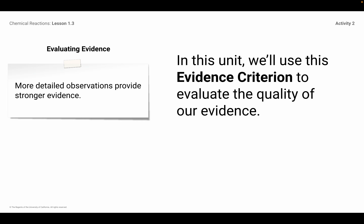In your notes, you've got a space here where we're looking at evaluating evidence. It's very important from now on that we identify this criterion. A criterion means it's something that something will be judged based on. So your evidence will be based on whether or not it's detailed. Go ahead and write that in: more detailed observations provide stronger evidence.